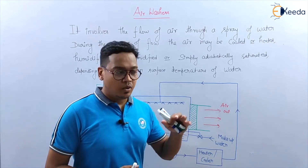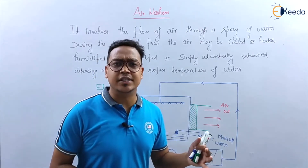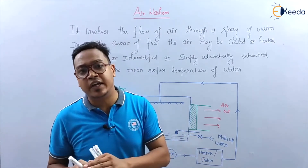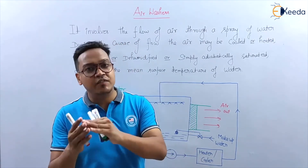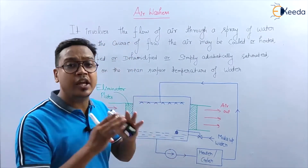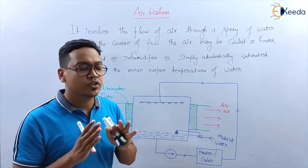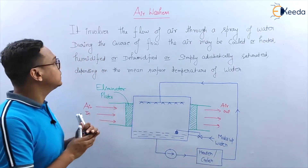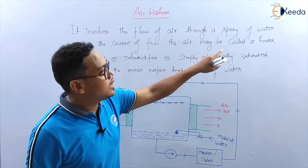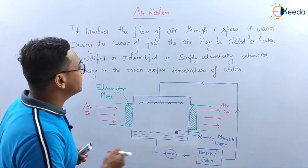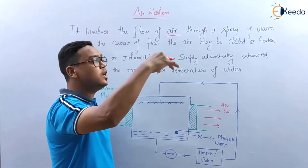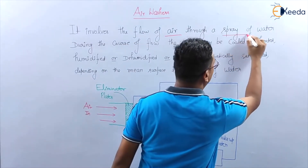In air washers, various types of processes like cooling, heating, humidification, dehumidification, cooling and humidification — all these types of processes we can achieve in air washers. An air washer involves the flow of air through a spray of water. That means air is flowing and on the air we are spraying water.